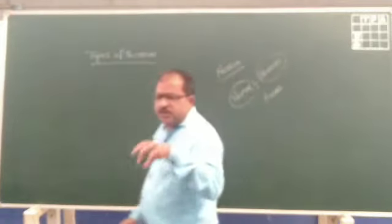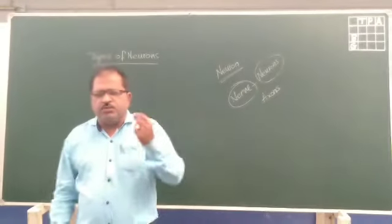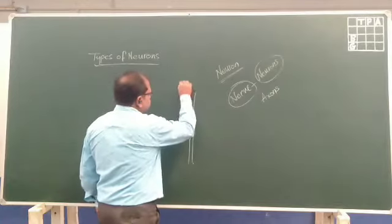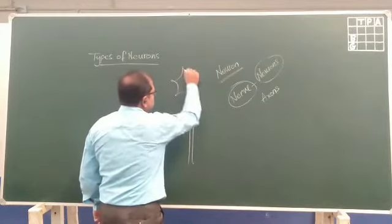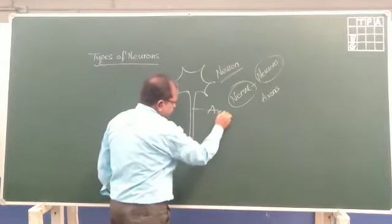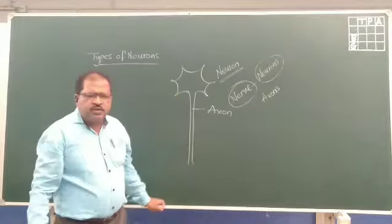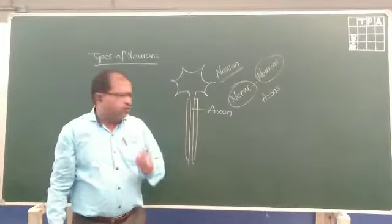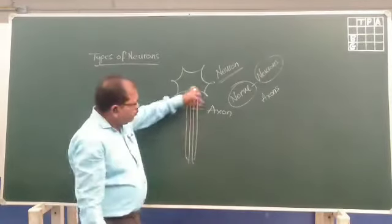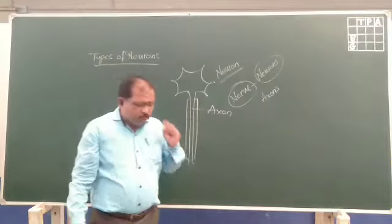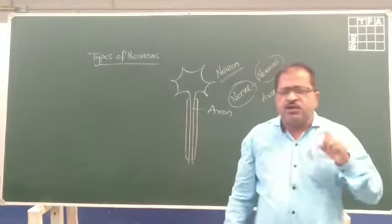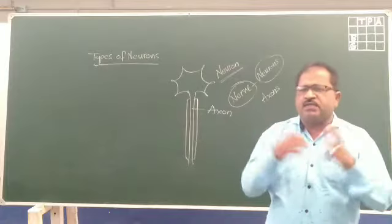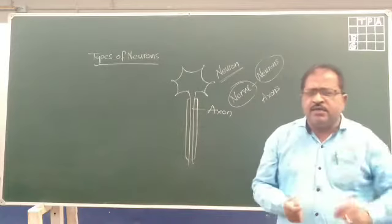Each nerve fiber, that means the axons, is covered by a thin sheet-like structure called the myelin sheath. Every nerve fiber has a myelin sheath. This myelin sheath acts as an insulator, preventing the combining of different impulses when they are traveling in the nerve fibers.